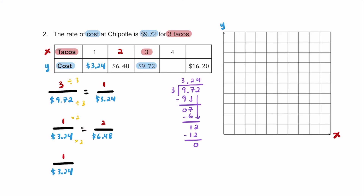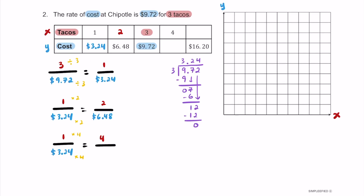We can use this unit rate to find the price of four tacos. Multiplying by 4: one to four is times 4, so multiply $3.24 by 4. 4 times 4 is 16, carry the 1. 4 times 2 is 8, plus 1 is 9. 4 times 3 is 12. So I'm looking at $12.96 for four tacos. Go ahead and write $12.96.